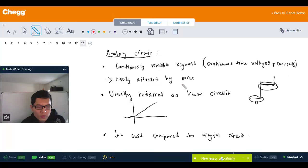example, noise from any source in the surrounding can make a big change for the voltage or current input. Analog circuits we usually refer to as linear circuits because you can think of this as something that